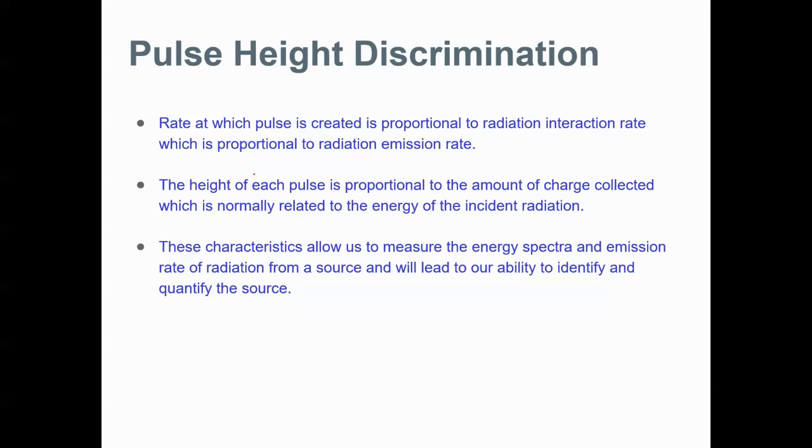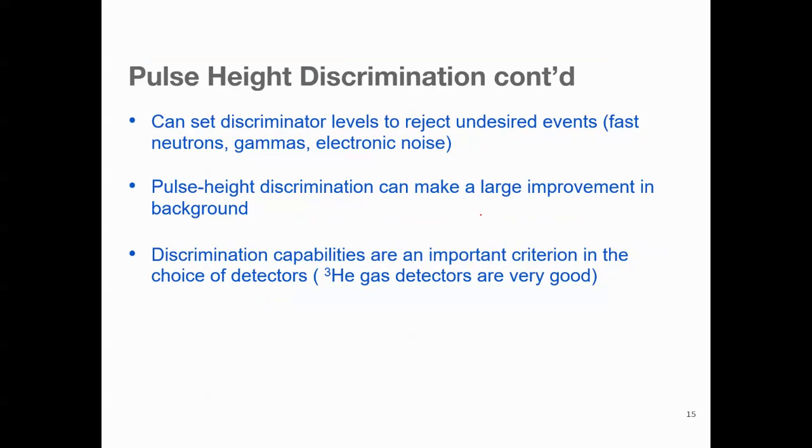To tackle this, pulse height discrimination is applied. The idea behind pulse height discrimination is that the pulse we get from the electronic system of the detectors, we can analyze it, and we know that the rate at which the pulse is created is proportional to the radiation interaction rate, that is the rate at which the radiation is interacting with the detection system, which is proportional to the radiation emission rate, and the height of each pulse is proportional to the amount of charge collected, which is related to the energy of the incident radiation. These characteristics will allow us to know the radiation emission rate and the energy of the incident radiation and will help us to identify and quantify the source. Technically, we can do this by setting discriminatory levels to reject the undesired events like fast neutrons, gamma, and electronic noise. Pulse height discrimination can make a large improvement in background. Discrimination capabilities differ for different choice of detectors.